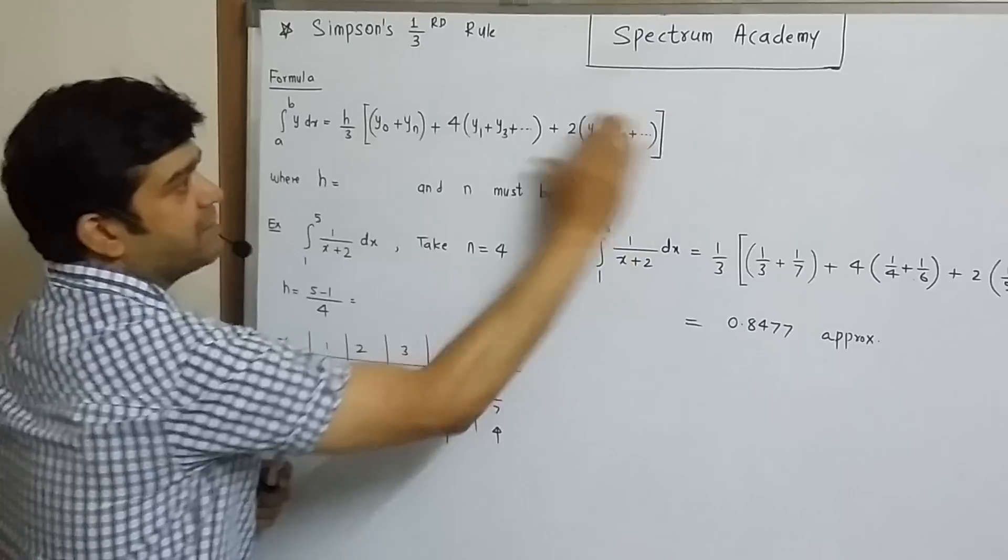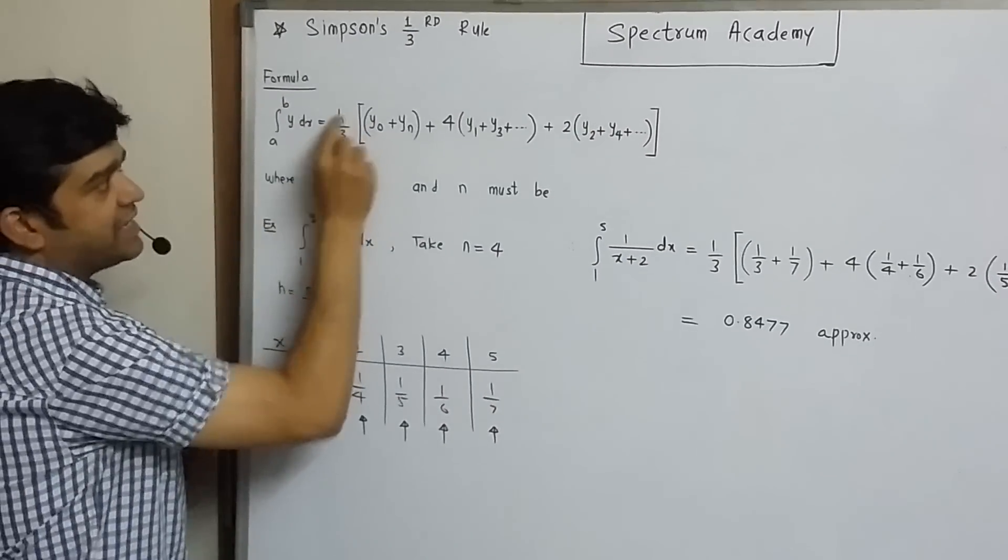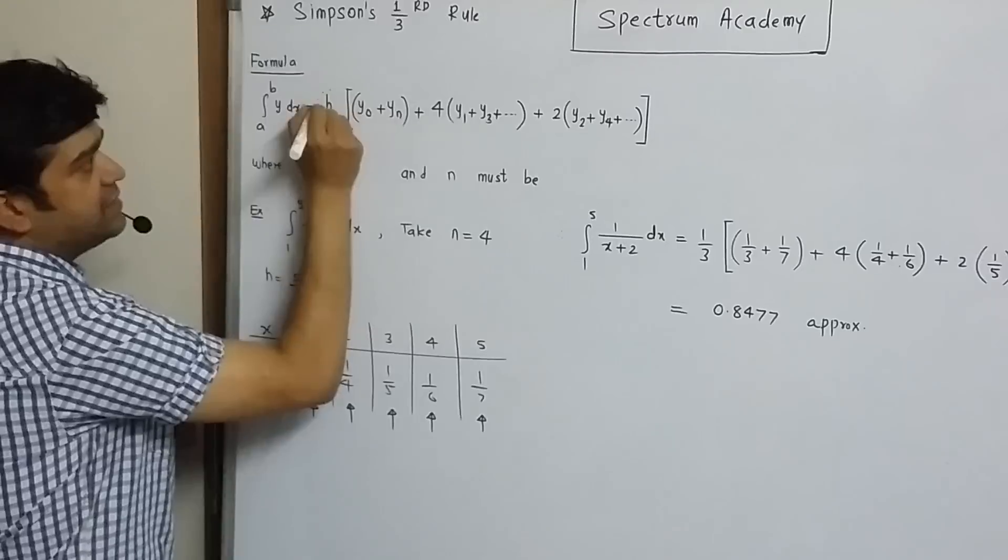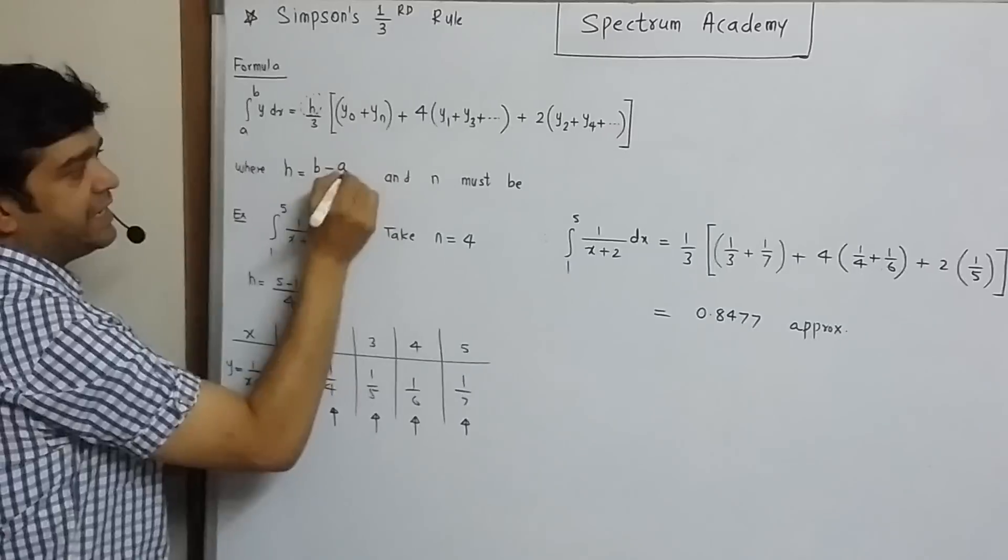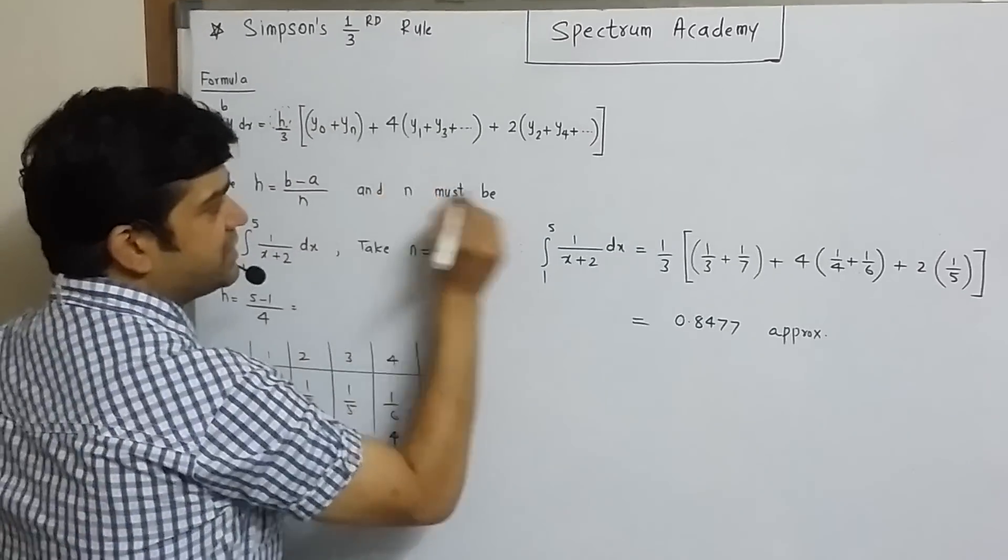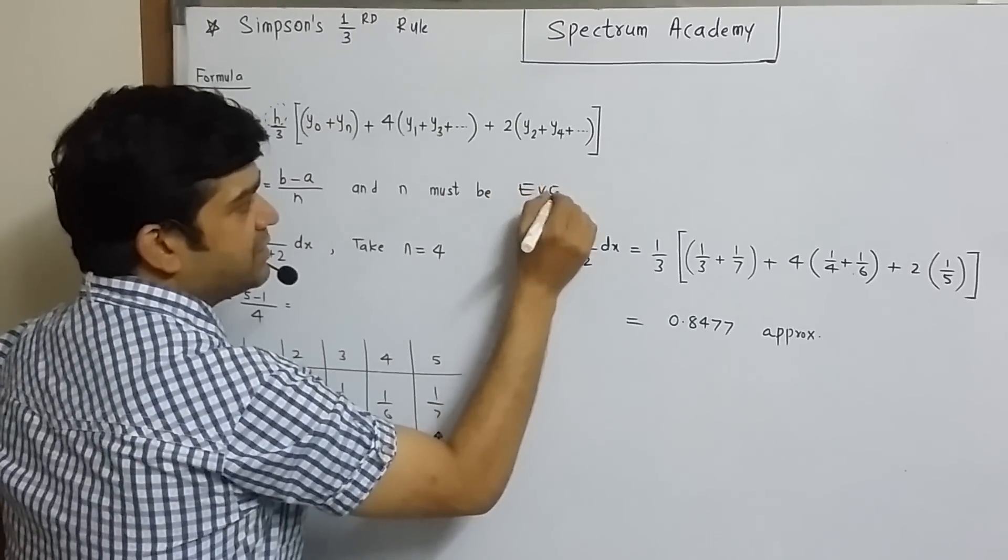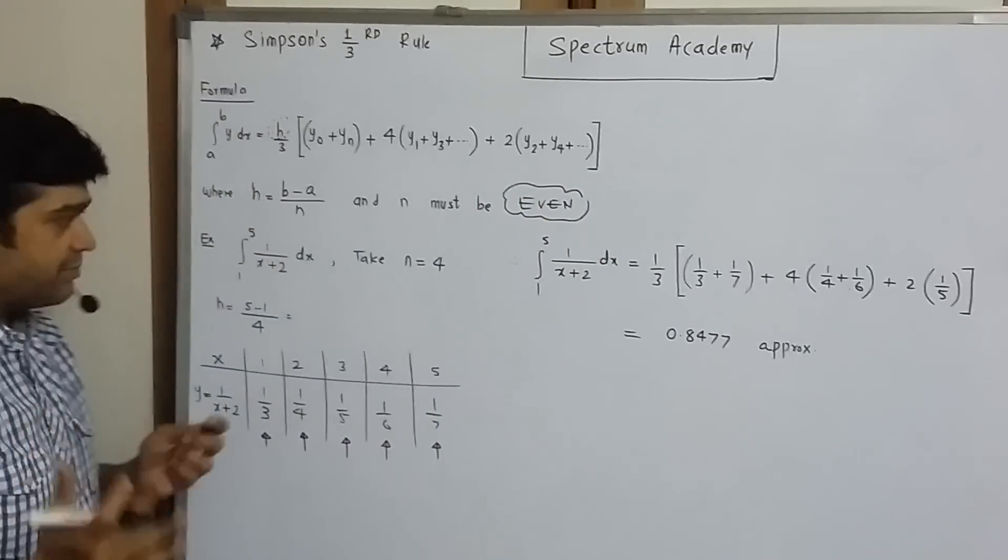So, step 1, remember this formula effectively. Now, what is this h in this formula? h in this formula is nothing but upper limit b minus lower limit a divided by n, where this n must be any suitable even number. Remember, this n must be even number.